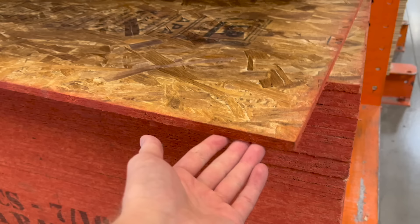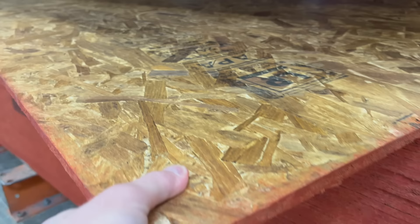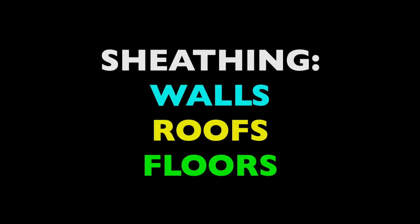Oriented Strand Board is an engineered wood panel. It's made of a variety of wood resins, waxes, and adhesives, which get mixed with uniform wood strands and pressed into mats and panels. These panels really only have one purpose: to cover the framed structures of our houses and provide them with support. OSB is typically used as sheathing on walls, roof structures, and floors.